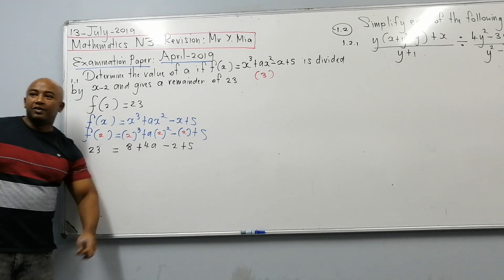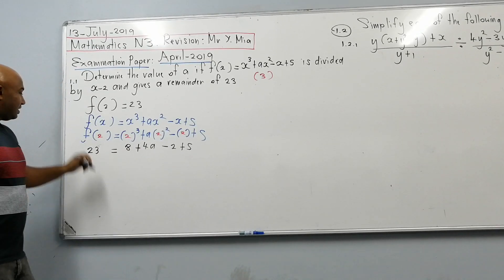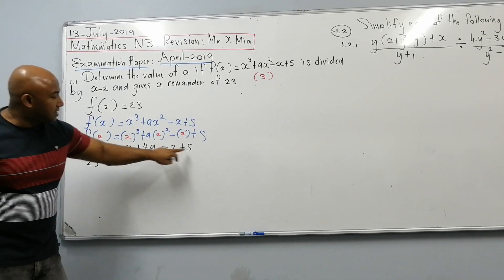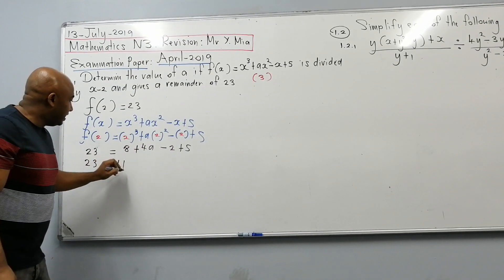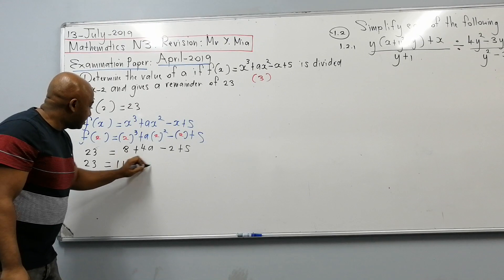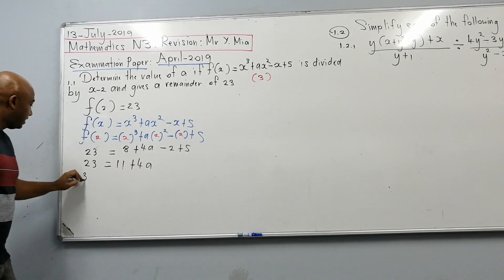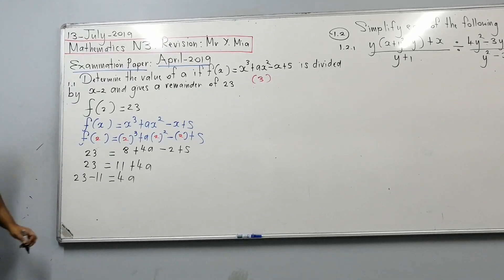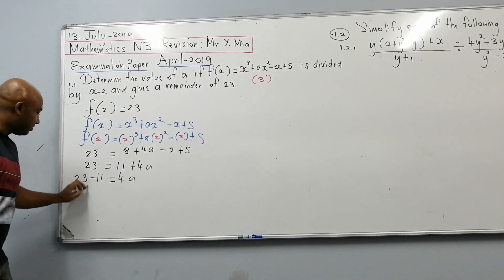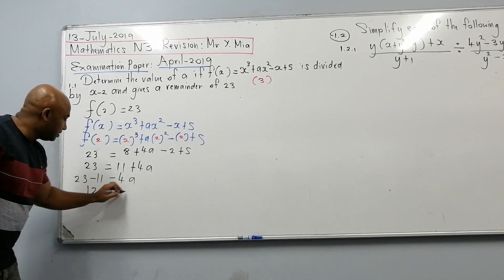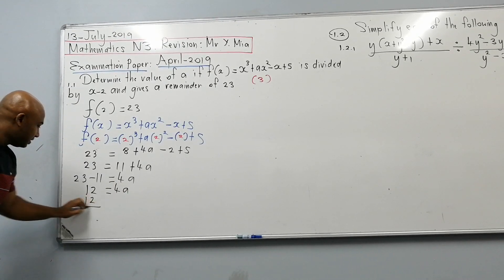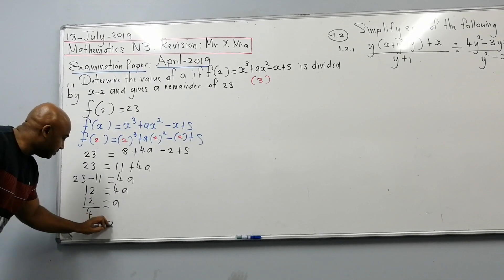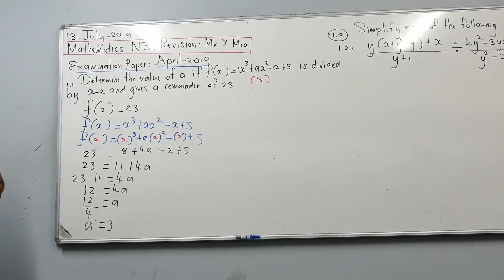So I only have one unknown there, which is a. So I've got 23 is equal to, I've got 8 minus 2, which is 6 plus 5, which is 11 plus 4a. So I've got 23 minus 11 is equal to 4a, which is going to be 12, is equal to 4a. So therefore, 12 over 4 is equal to a, so a is equal to 3. You've got that.